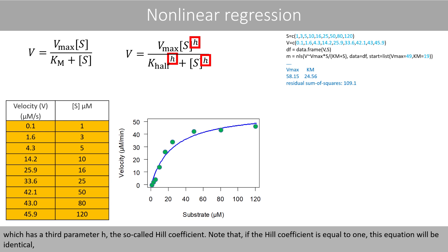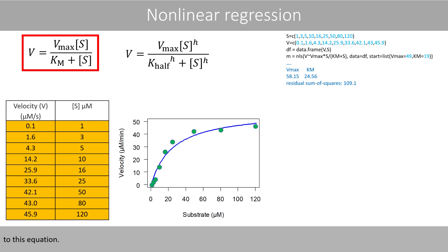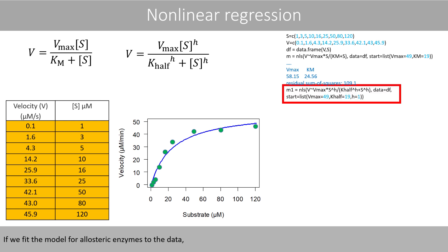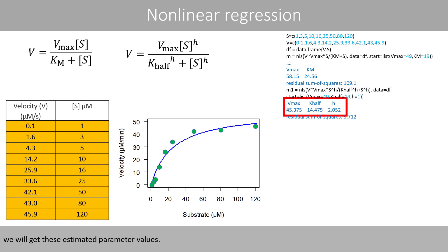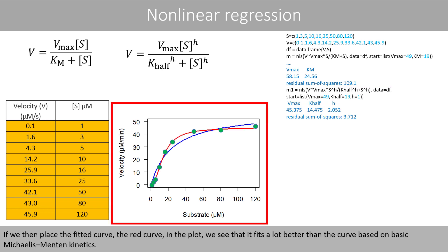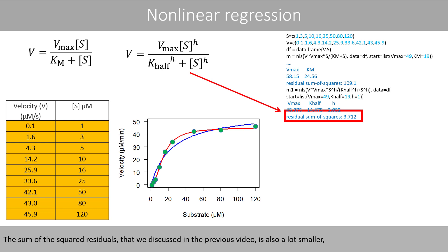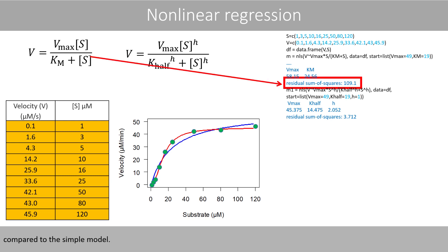To model an allosteric enzyme, we can use the following equation, which has a third parameter H, the so-called Hill coefficient. Note that if the Hill coefficient is equal to 1, this equation will be identical to the simple Michaelis-Menten equation. If we fit the model for allosteric enzymes to the data, we will get these estimated parameter values. If we then place the fitted curve — the red curve — in the plot, we see that it fits a lot better than the curve based on the simple Michaelis-Menten kinetics. The sum of the squared residuals is also a lot smaller compared to the simple model.